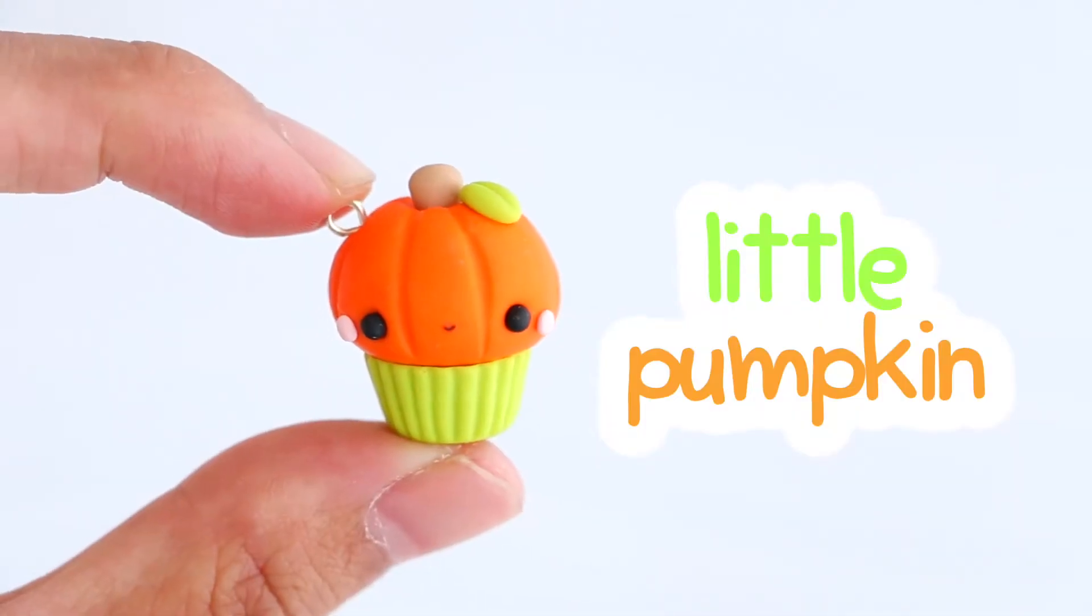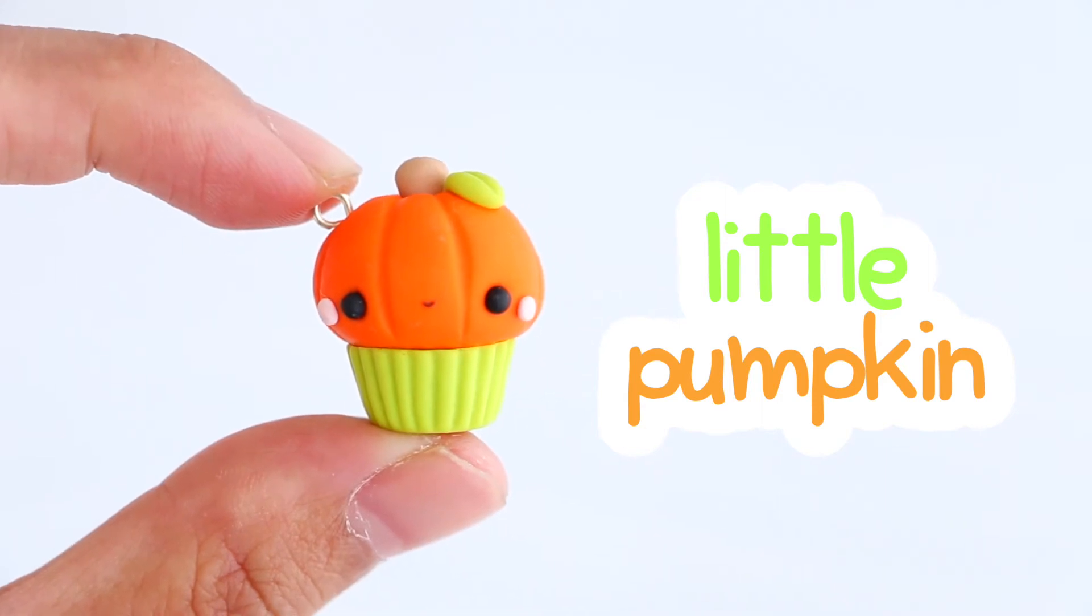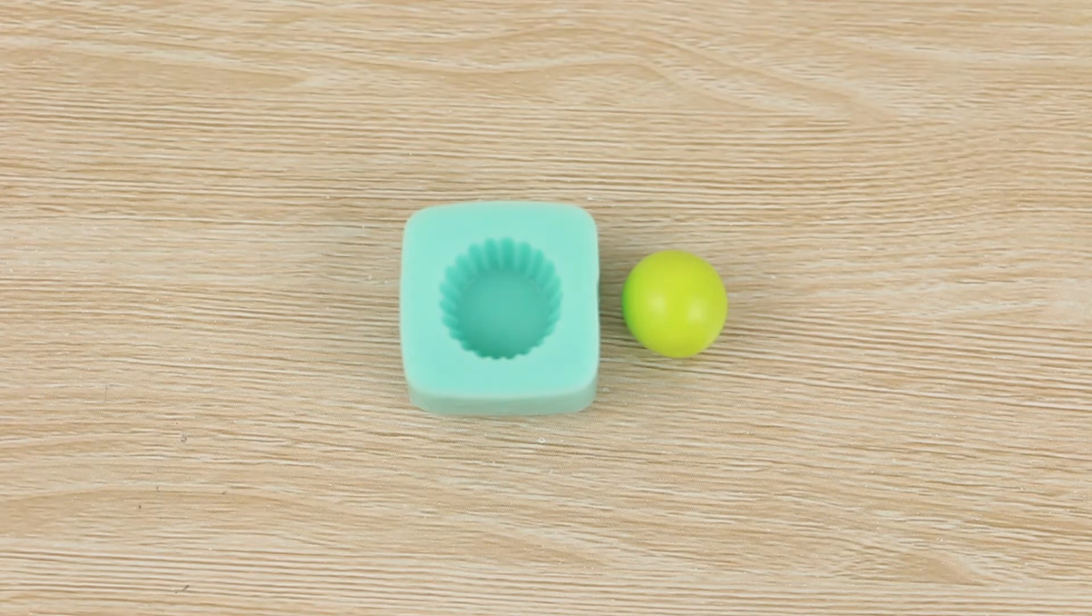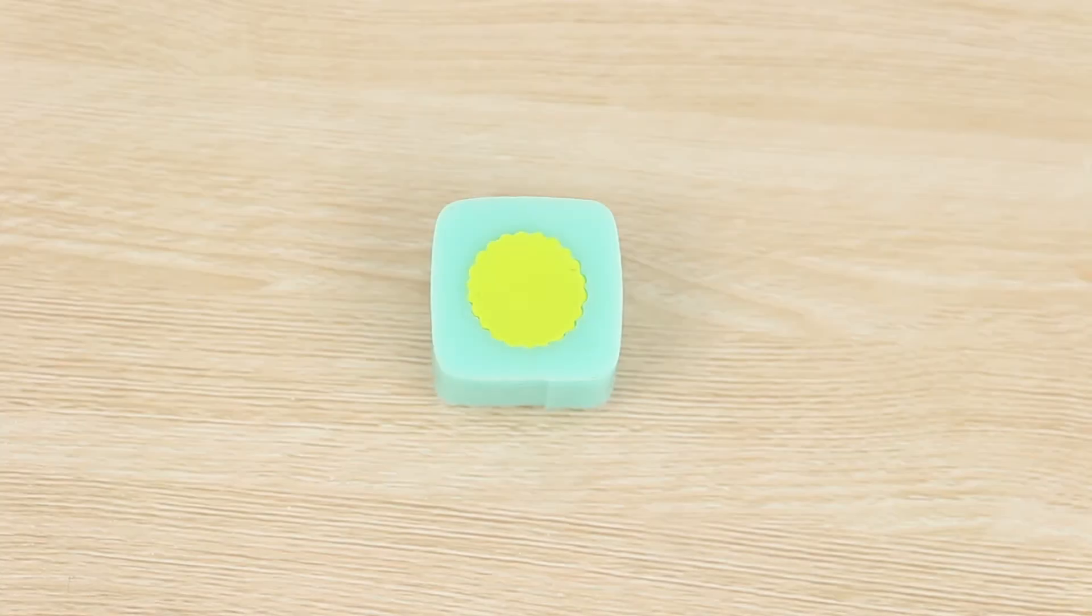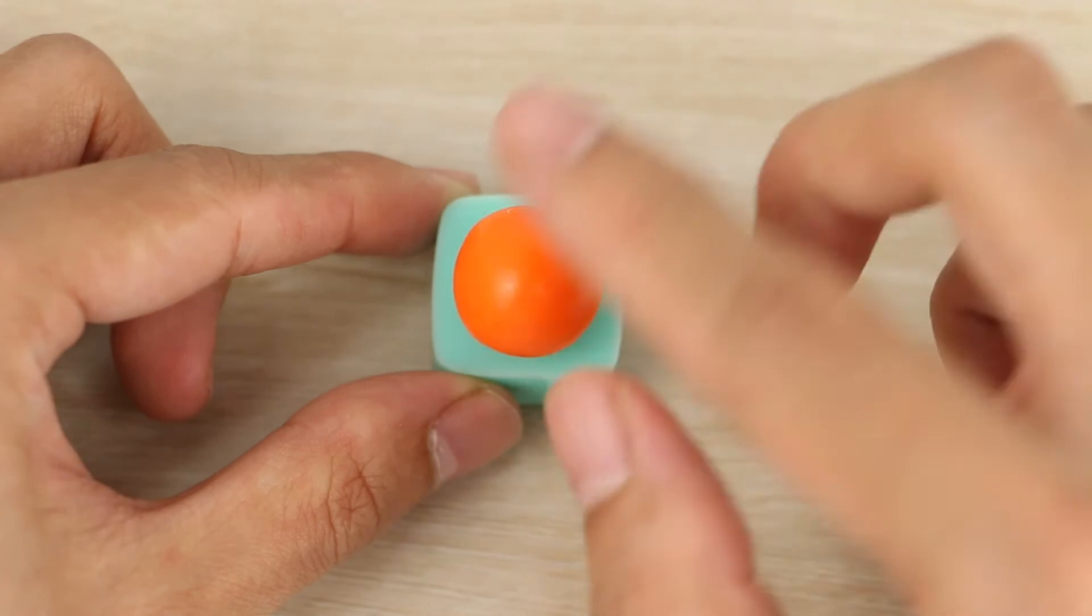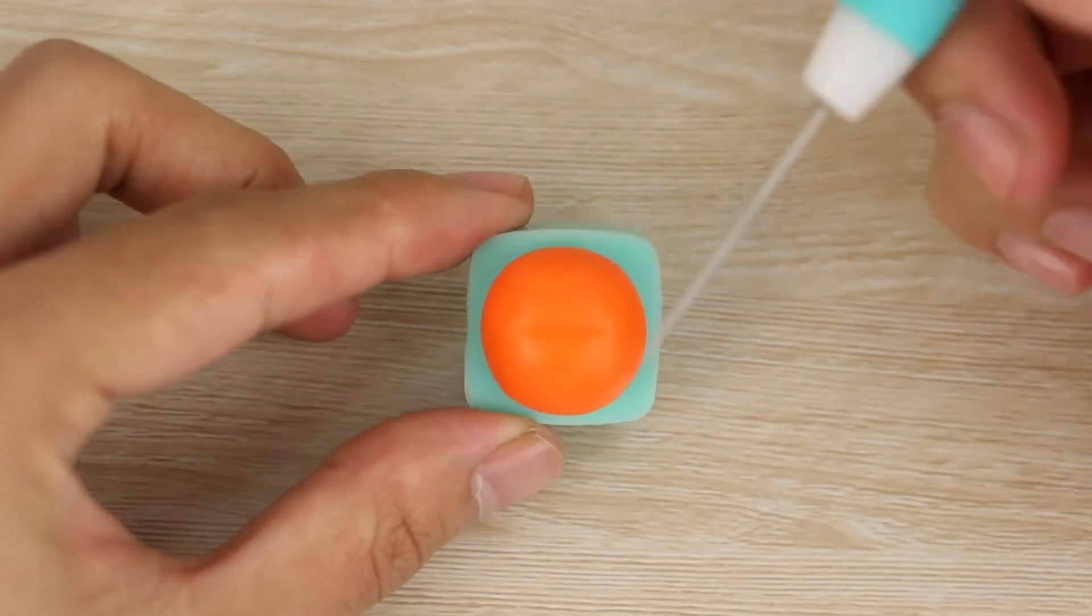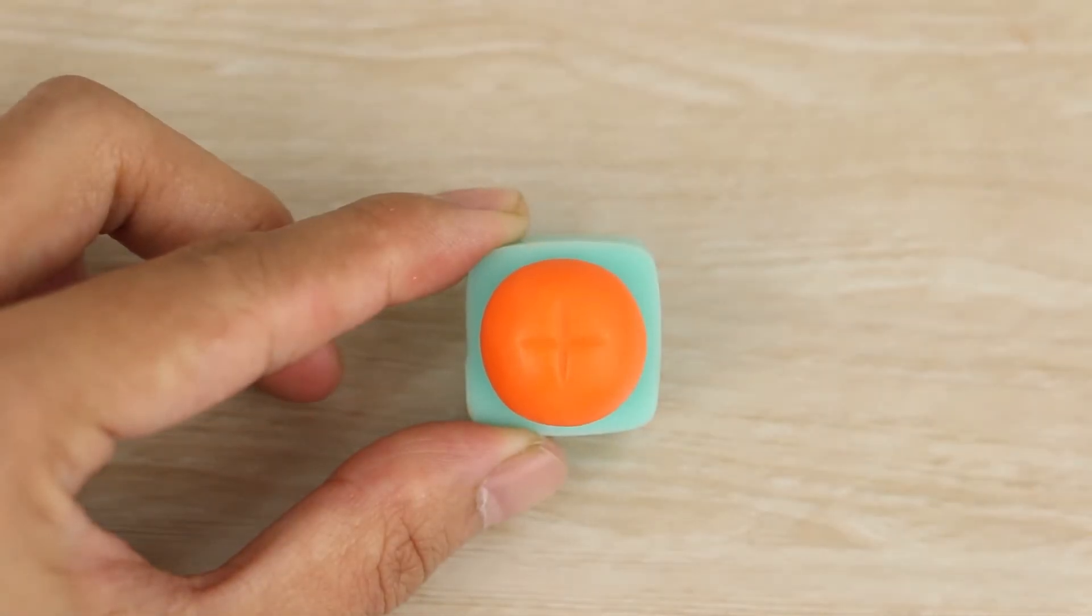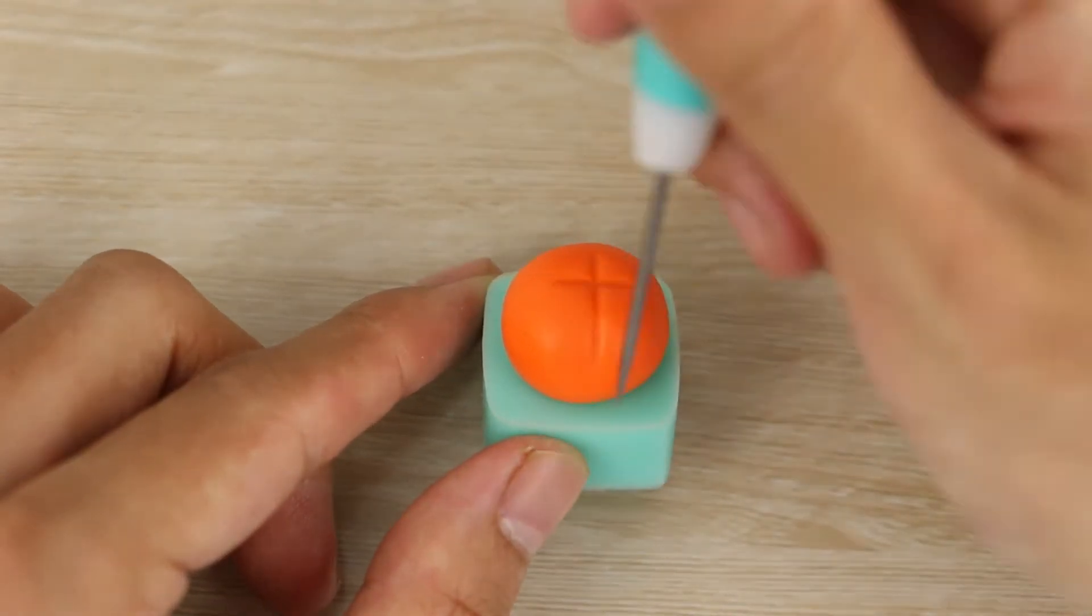Next is the little pumpkin cupcake. For the base I'm using some green clay and for the head I'm using orange. Then with my needle tool I'm pressing across into the top of the ball and making those lines longer along the sides all the way down to the base.